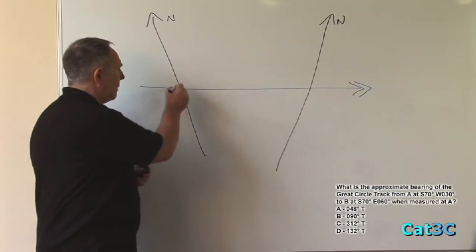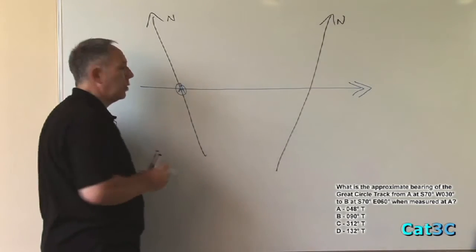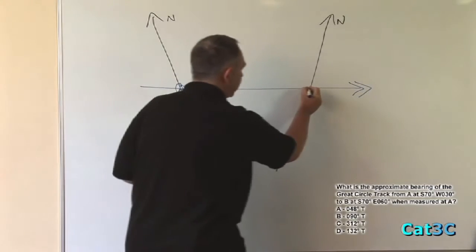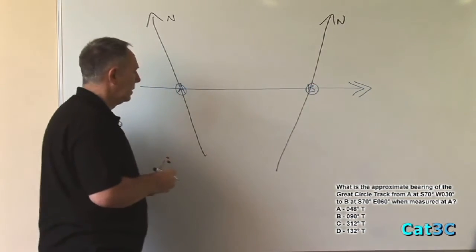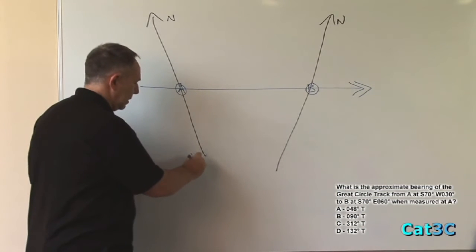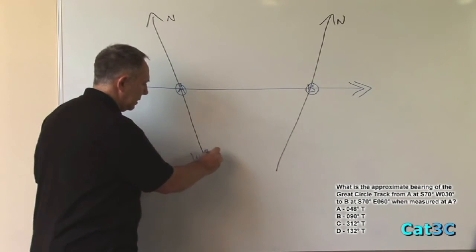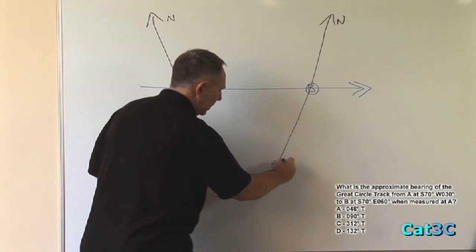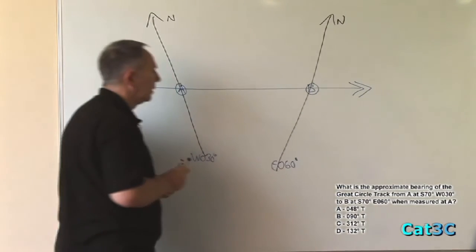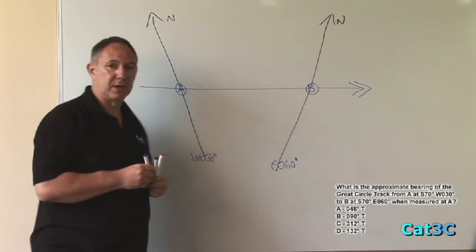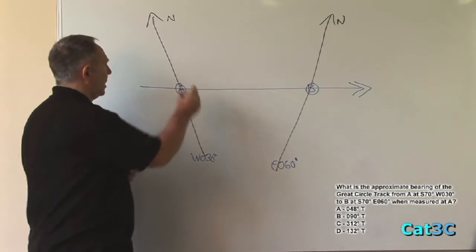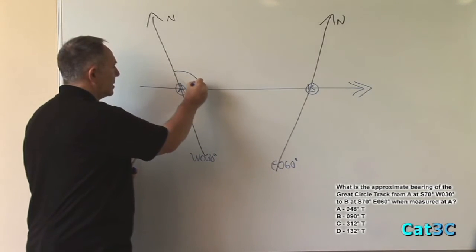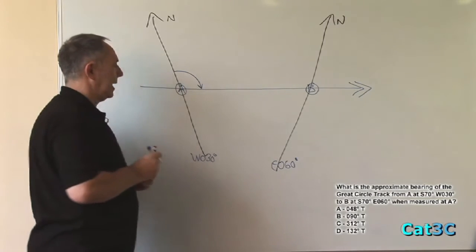Next thing, mark on A, which is the point of origin, and B, the point of destination. Making this meridian West 30 and this meridian East 60. The angle that we're trying to find is the Great Circle track at A, and the Great Circle track at A is simply that angle there.